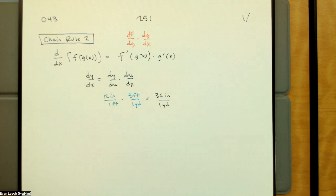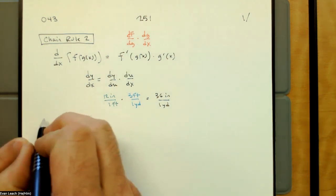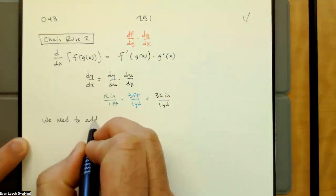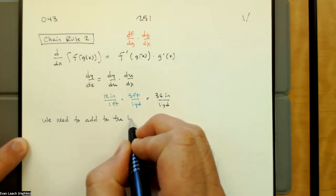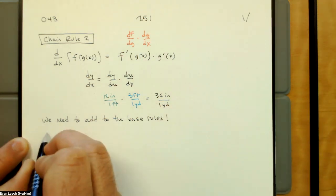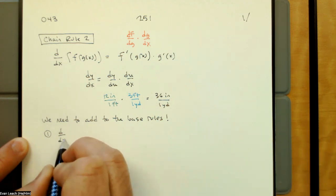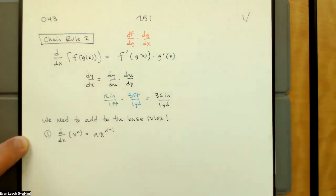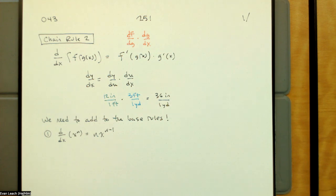Right now we've only got one kind of base rule for derivatives: d/dx of x^n is nx^(n-1). Remember that derivative is rate of change, and this matches two of the three rates of change we talked about earlier. So set the Wayback Machine to two weeks ago.